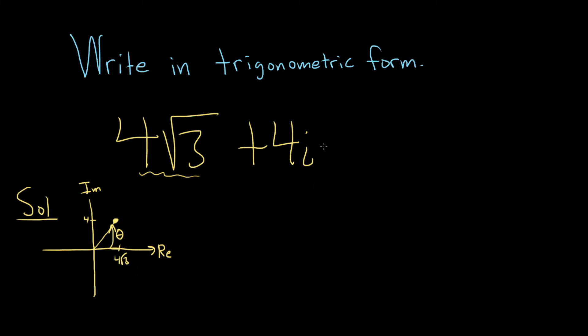So what is trig form? Trig form looks like this. It's r times cosine theta plus i sine theta. So this complex number should be equal to another complex number of this form.